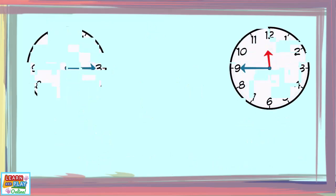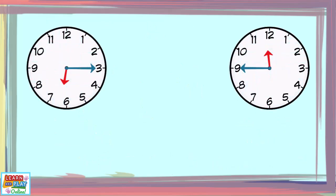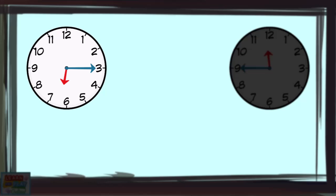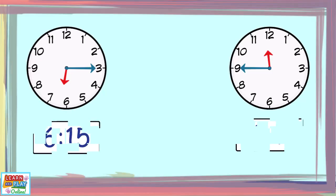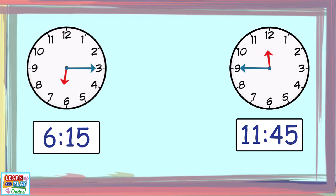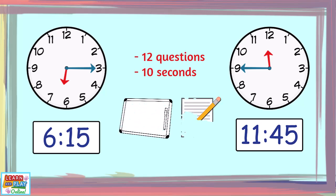In this quiz, you will be shown a time on an analogue clock. It may be a quarter past time or a quarter to time. Your job is to tell the time in the digital form. There will be a total of 12 questions to answer and you will get 10 seconds for each question. Record your answers on a whiteboard or a piece of paper.